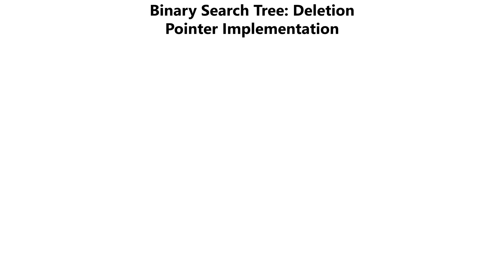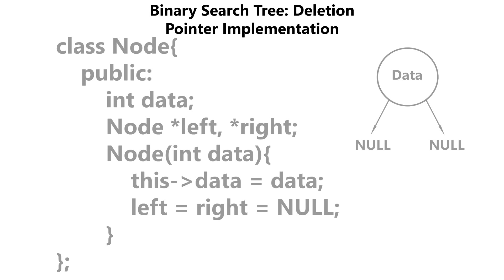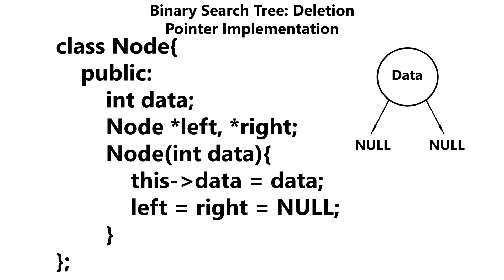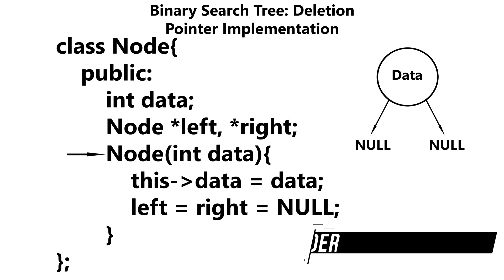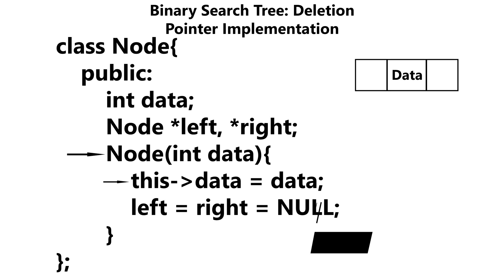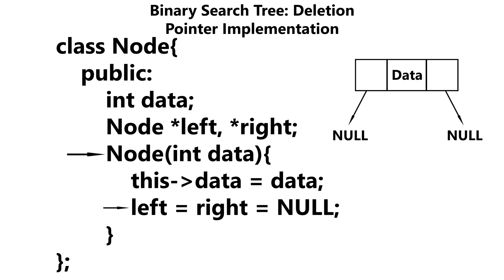To get started, we're going to be creating a helper class called node. This node class is going to have the following data members: data, which holds the data for our node, and a pointer to the left and right child nodes. We're going to have a one argument constructor which is getting passed in data, we set our data to the data being passed in, and then we initialize our left and right pointer to null — to symbolize that this node has no children.